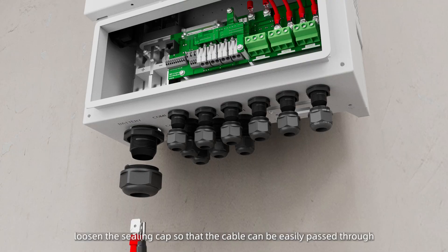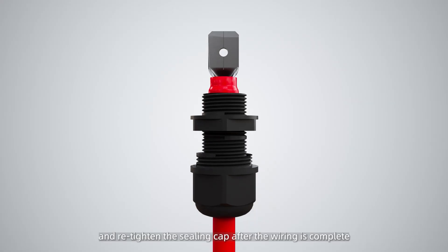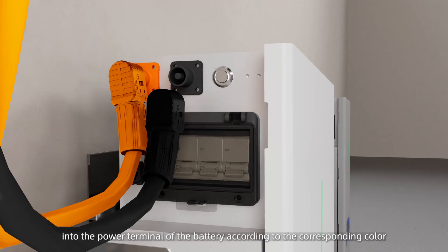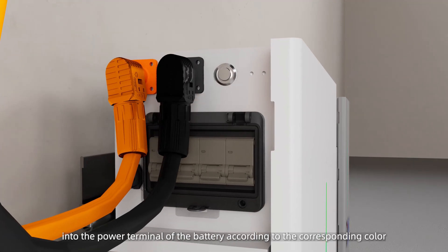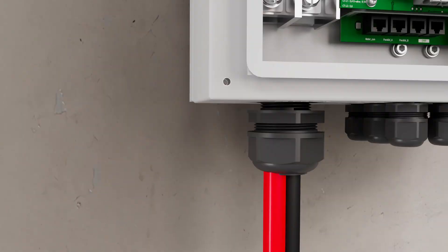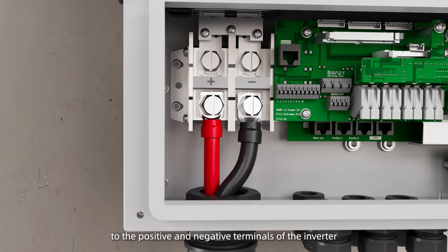When wiring, loosen the sealing cap so that the cable can be easily passed through and re-tighten the sealing cap after the wiring is complete. Plug the end of the power cable with a quick plug terminal into the power terminal of the battery according to the corresponding color. Connect the other end of the power cord to the positive and negative terminals of the inverter.